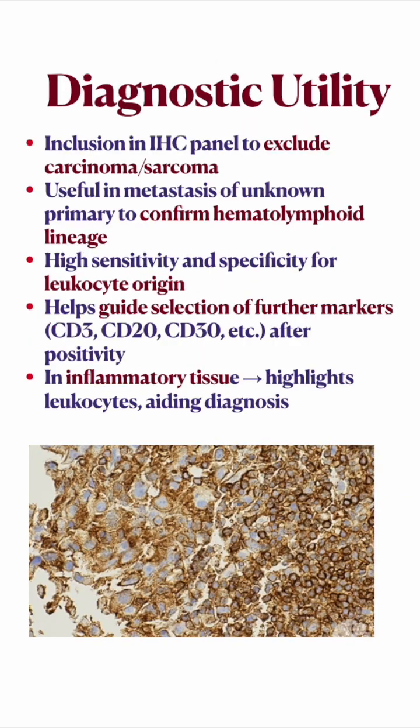CD45 is mainly used to exclude carcinoma and sarcoma, or to confirm a diagnosis of hematopoietic lineage. It is very sensitive and specific for leukocyte origin. After this, you can use a further selection of markers for subtyping. In inflammatory conditions, it mainly helps us identify the inflammatory cells.